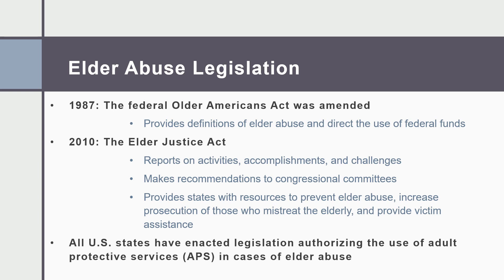Then in 2010 we got the Elder Justice Act, which requires the reporting of activities, accomplishments, and challenges around elder abuse, makes recommendations to different congressional committees, provides states with resources to prevent elder abuse and increase prosecution, and provides victim assistance to elder abuse victims. The Older Americans Act and the Elder Justice Act are the two main pieces of legislation we look to when talking about elder abuse.